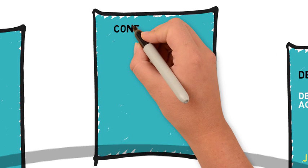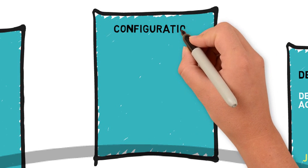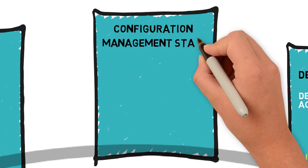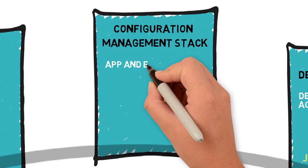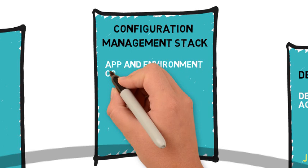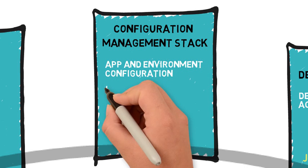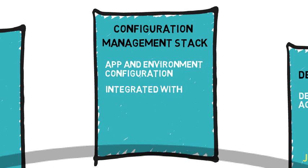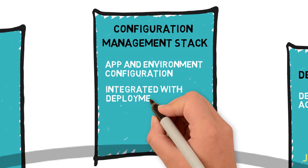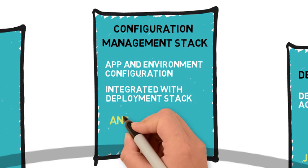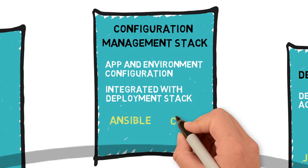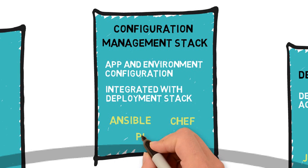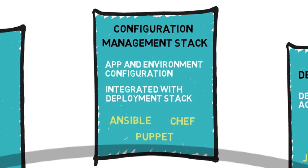Next in the toolchain is the configuration management stack, which supports application and environment configuration and is often tightly integrated with the deployment stack. Typical tools in this stack are Ansible, Chef, Puppet, and Chocolatey.